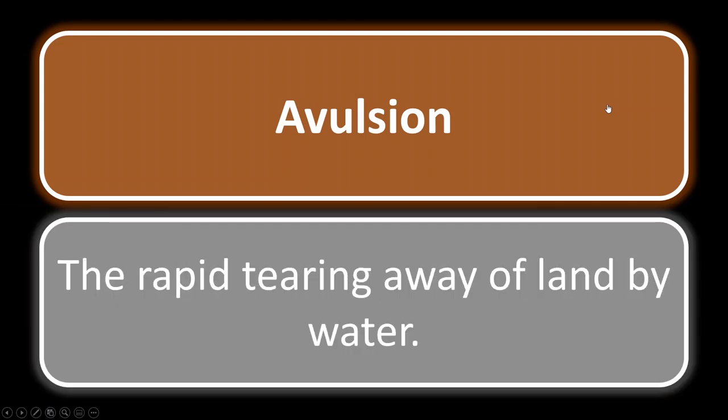Avulsion. This falls under the broader concept of accretion — which is the gradual buildup of land through alluvium or man-made annexation, meaning you gain more land. Avulsion is the opposite: it is the rapid tearing away of land by water action. So avulsion is the opposite of accretion.